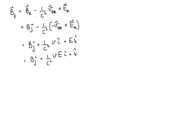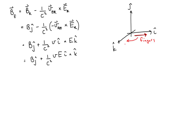Is it positive y or negative y? Using the right-hand rule: i-hat points in the x direction, j-hat is vertical, and k-hat comes towards us. Placing my fingers in the direction of i-hat (the first vector) and curling toward k-hat (the second vector), my thumb ends up pointing down. So i-hat cross k-hat equals minus j-hat.